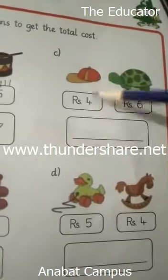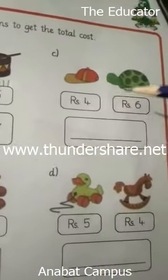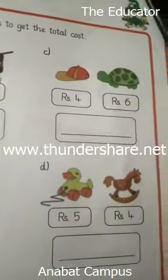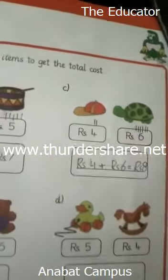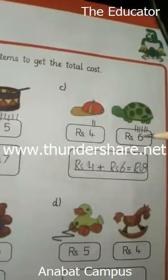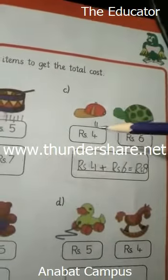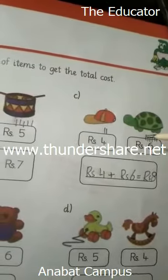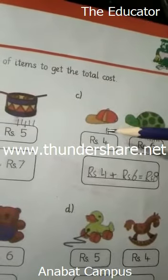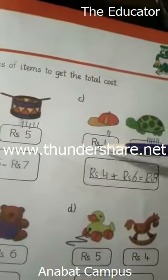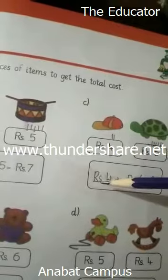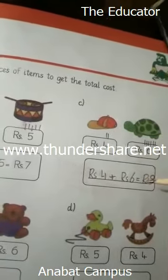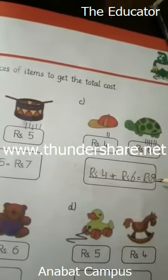This hat 4 rupees ki and this turtle 6 rupees ka. So hum ne yahan 6 lines draw ki and here 2, counting 1, 2, 3, 4, 5, 6, 7, 8. Rupees 4 plus rupees 6 is equal to rupees 8.